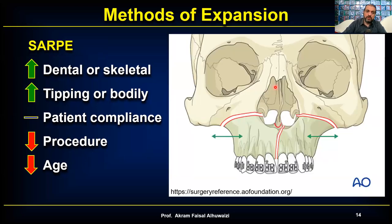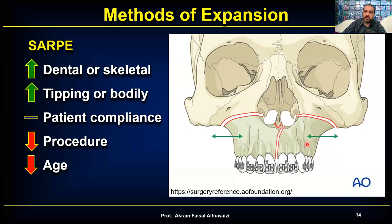There's also SARPE — surgically assisted rapid palatal expansion — reserved for adults. The surgeon reflects the buccal flap, cuts the buccal bone, separates the nasal septum and lateral nasal wall, separates the palate, expands using a regular Hyrax, then sutures everything back. It's effective for surgical cases, but if surgery wasn't otherwise needed, it's quite traumatic.